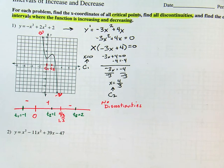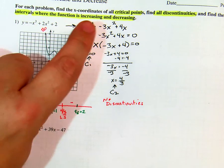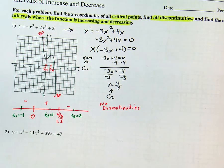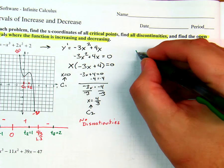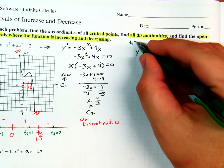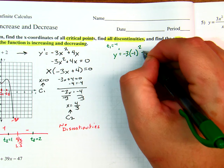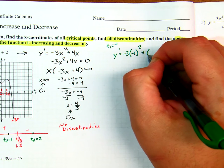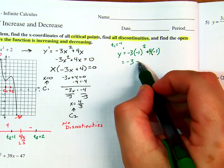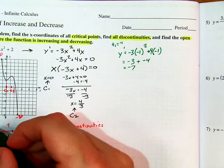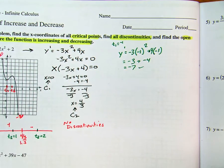What do we do with the test points? Plug them into the derivative — the first derivative test. We're looking for positive and negative slopes of tangents. For T1 equals negative 1: y prime equals negative 3 times negative 1 squared plus 4 times negative 1, which is negative 3 plus negative 4, equals negative 7. That verifies the interval was negative — it checks out.